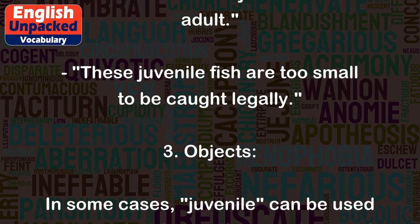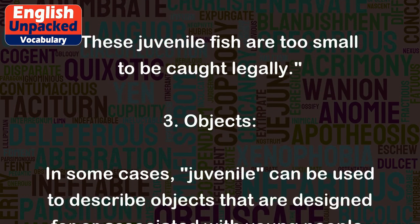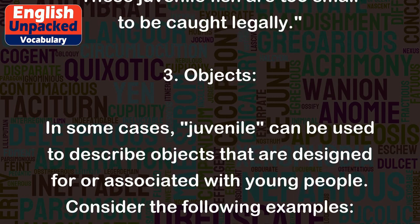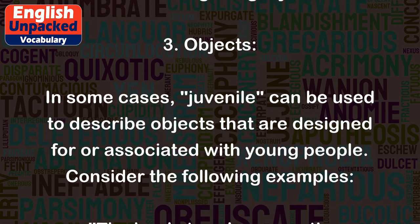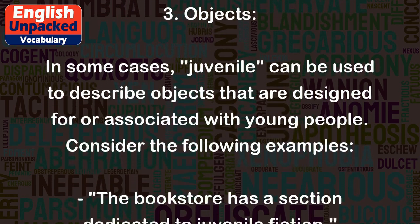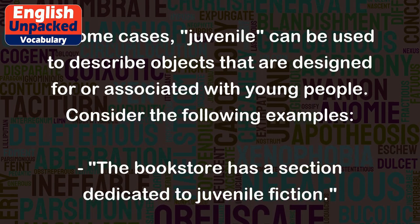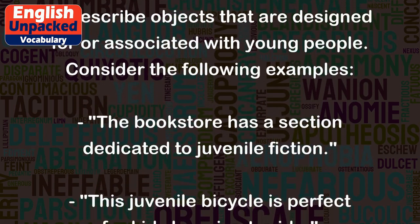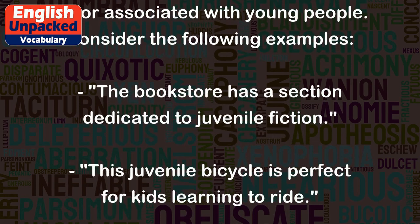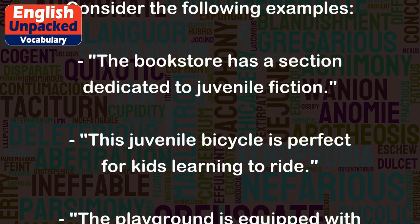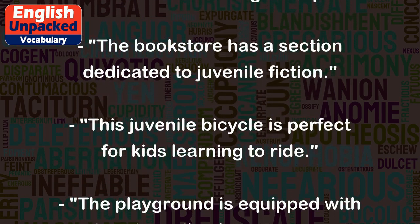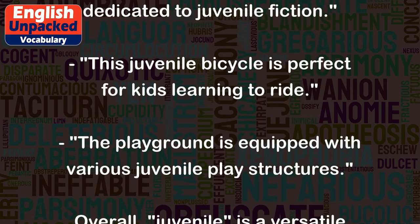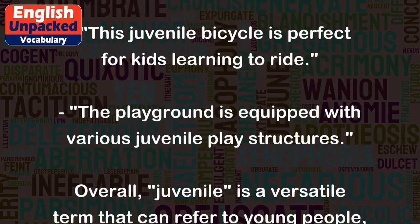3. Objects. In some cases, 'juvenile' can be used to describe objects that are designed for or associated with young people. Consider the following examples: the bookstore has a section dedicated to juvenile fiction. This juvenile bicycle is perfect for kids learning to ride. The playground is equipped with various juvenile play structures.